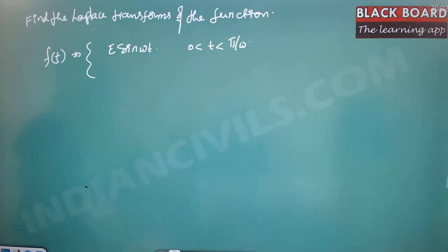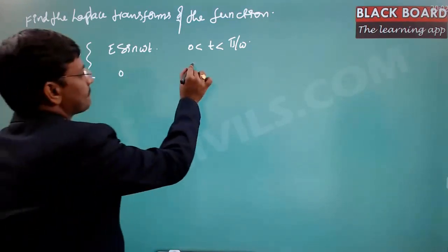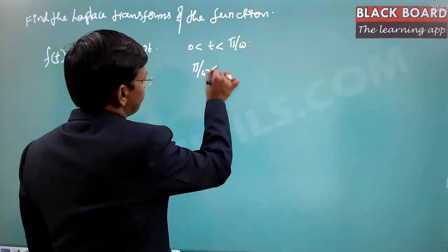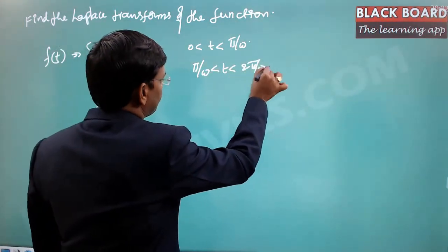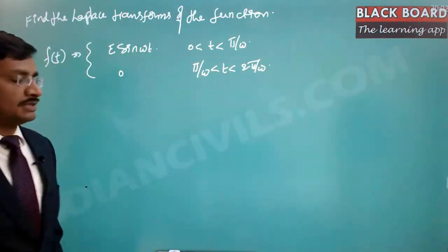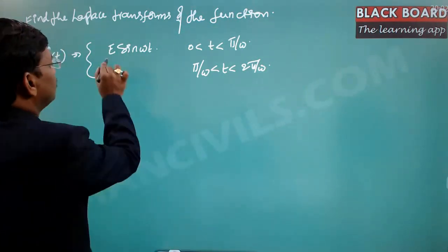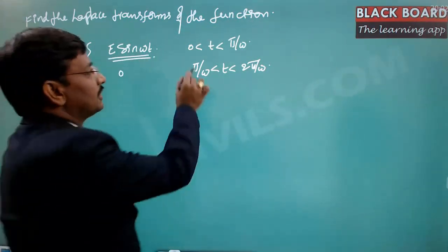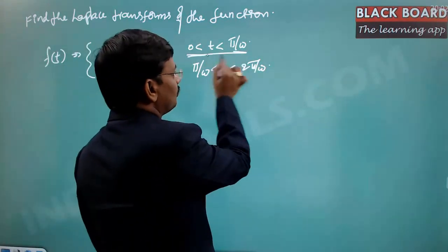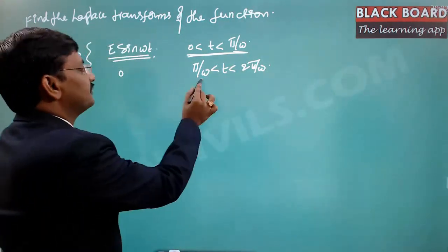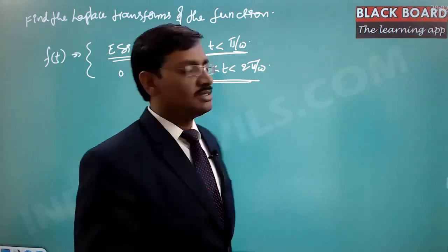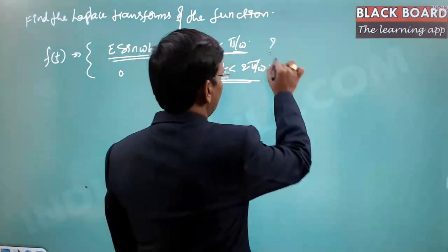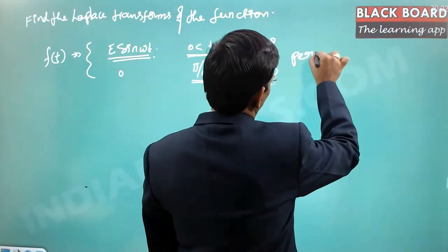The second part is equal to 0, from π/ω to t less than 2π/ω. So this is within the range of 0 to π/ω, and this is within the range of π/ω to 2π/ω. This is a periodic waveform.